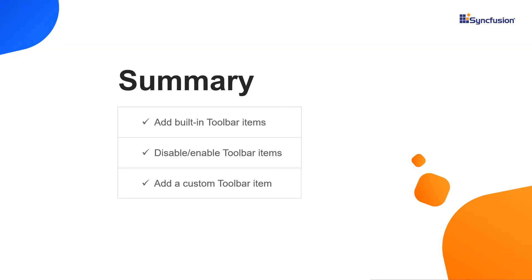That's it. You can download this working example from the GitHub link in the video description below. You can also check if you're eligible for our community license, which gives you a free license key to use our Blazor products. If you found this video useful, click the like button and subscribe to our channel to get notifications about new videos. Thanks for watching.